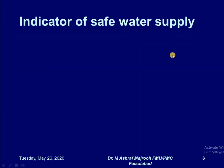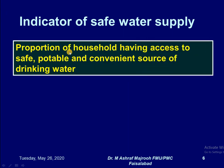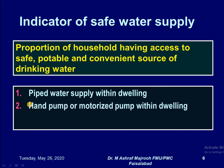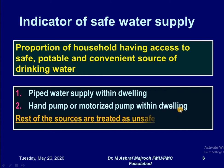The indicator for safe water supplies is the proportion of households having access to safe, portable and convenient sources of drinking water. Piped water supply within the dwelling is taken as safe water supply. A hand pump or motorized pump within the dwelling is also taken as safe water supply. Other sources are treated as unsafe unless they are protected — if protected, they can be included in safe water supply.